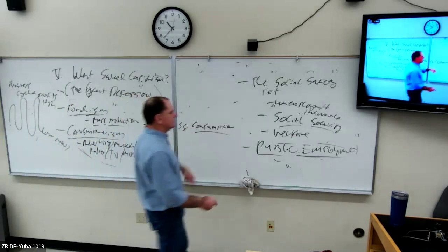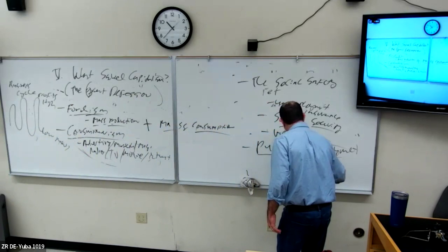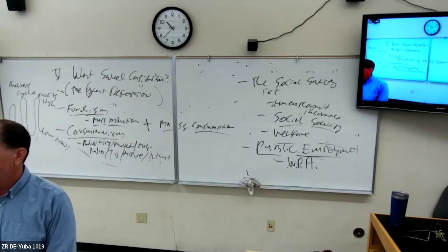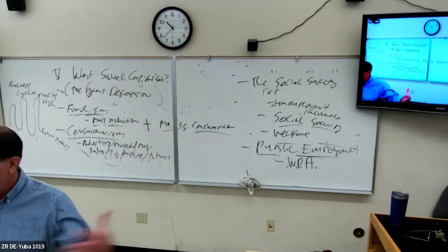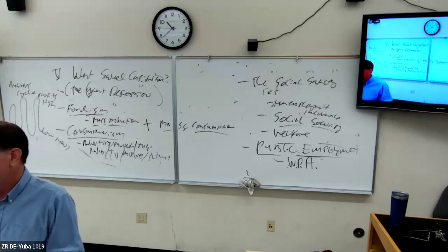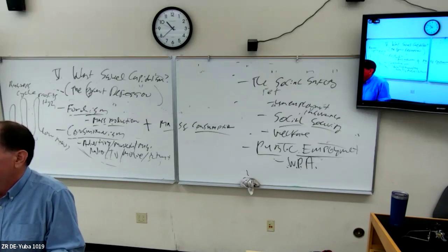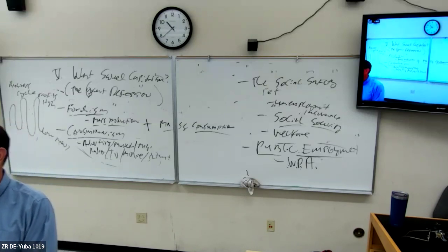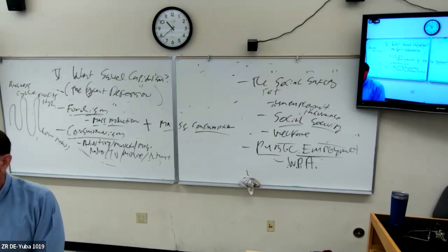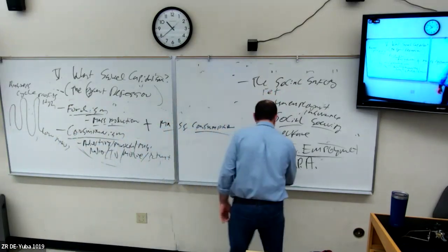During the Great Depression there was something called the Works Progress Administration — the WPA. The WPA hired out-of-work skilled workers who didn't have a job because of the depression. The government said: we need your help doing stuff that business doesn't do. For example, in Marysville, Ellis Lake and the whole park were built by the WPA. The Tower Bridge in Sacramento, the Golden Gate Bridge in San Francisco — these were built by out-of-work workers hired by the government.